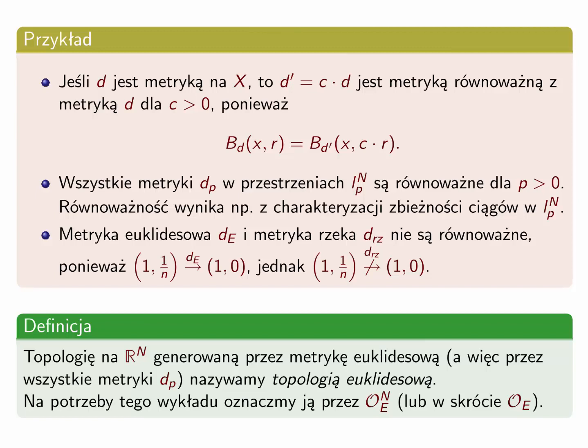Dochodzimy do definicji. Topologię na Rn generowaną przez metrykę euklidesową, a więc przez wszystkie metryki dp zależne od parametru p, nazywamy topologią euklidesową. Oznaczmy ją symbolem O z indeksem dolnym e, ewentualnie dokładając jeszcze indeks górny n, jeśli ważny jest wymiar przestrzeni. Jest to najczęściej domyślna topologia na przestrzeni Rn — jeśli nie mówi się, jaką topologię się rozważa na Rn, to rozważa się topologię euklidesową.